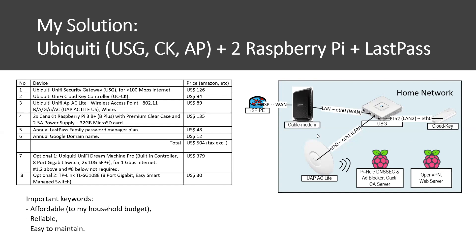Here's the breakdown: $100 for the USG, another $100 for the controller, another $100 for the access point, and then two Raspberry Pis for my internal and external services like DNS server, network monitoring, web server, etc. And of course I need a password manager because I'm going to create a lot of credentials for each of these devices. And just for fun, I host a website on a Raspberry Pi and point a DNS name using Google Domains.